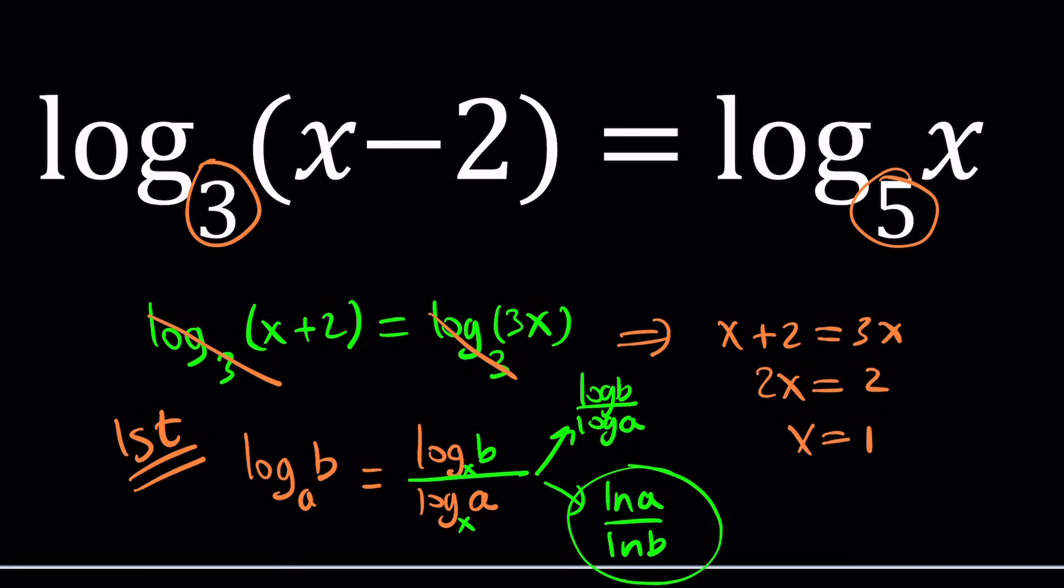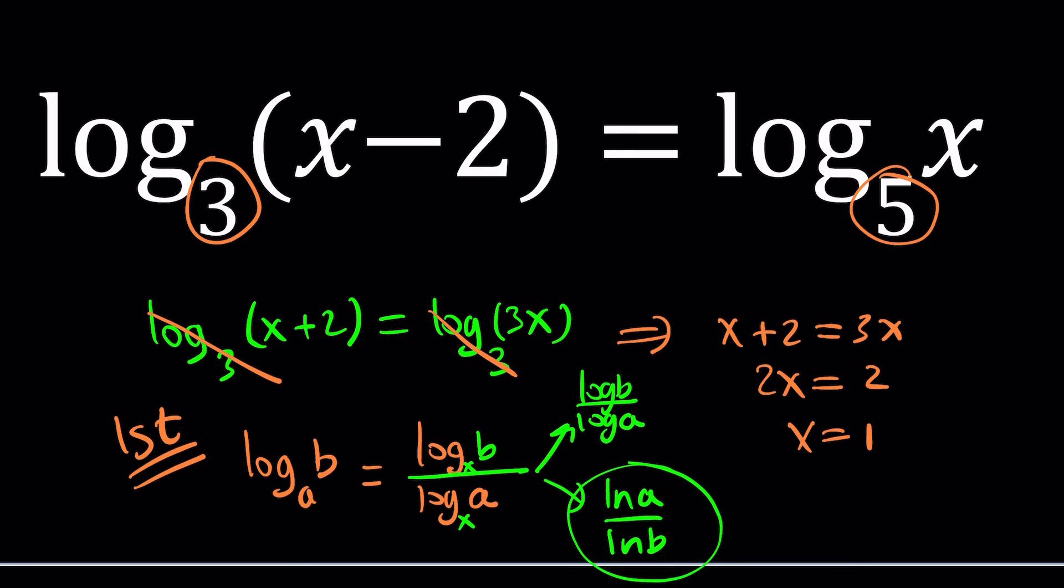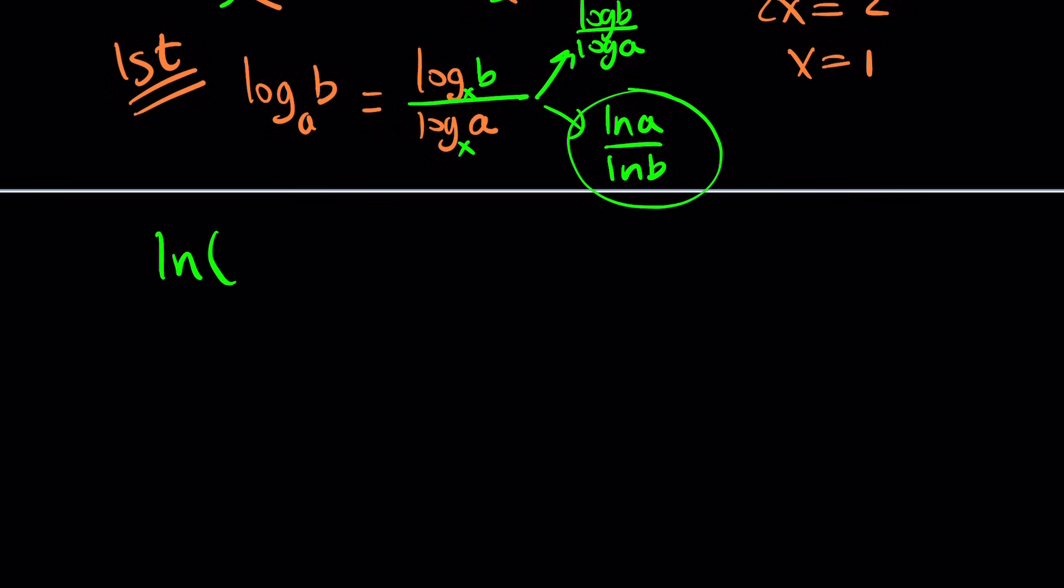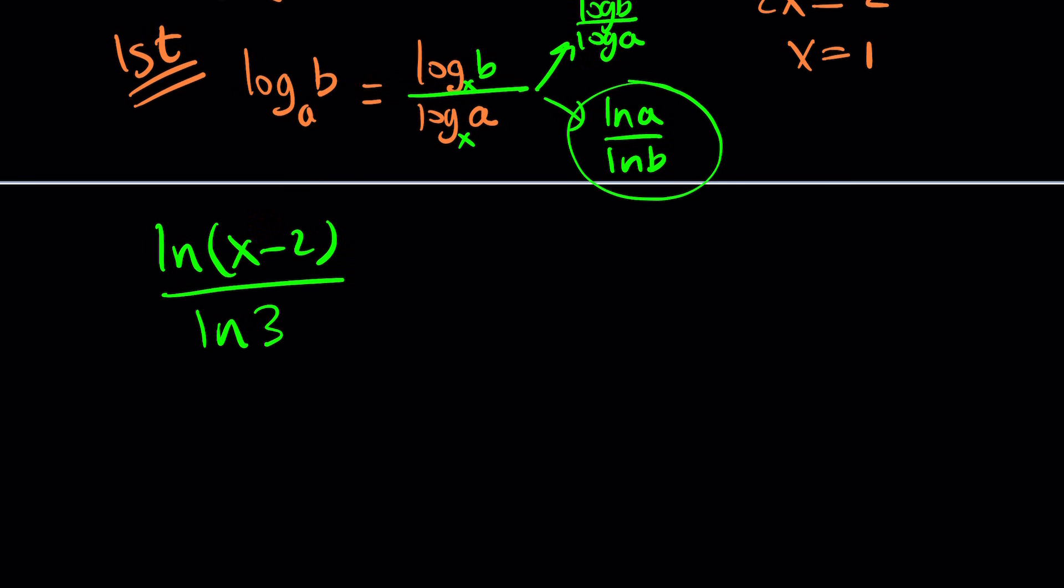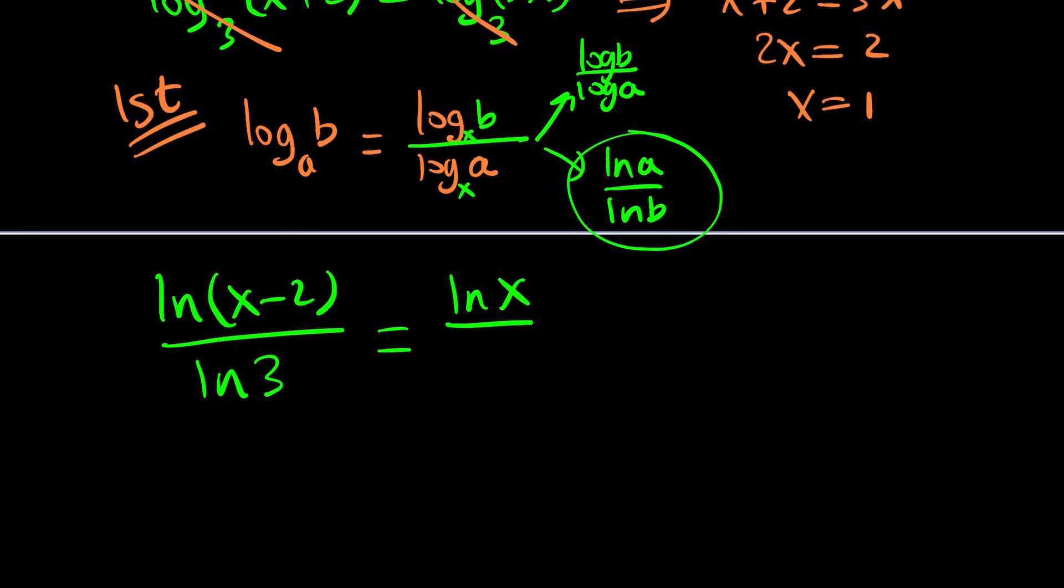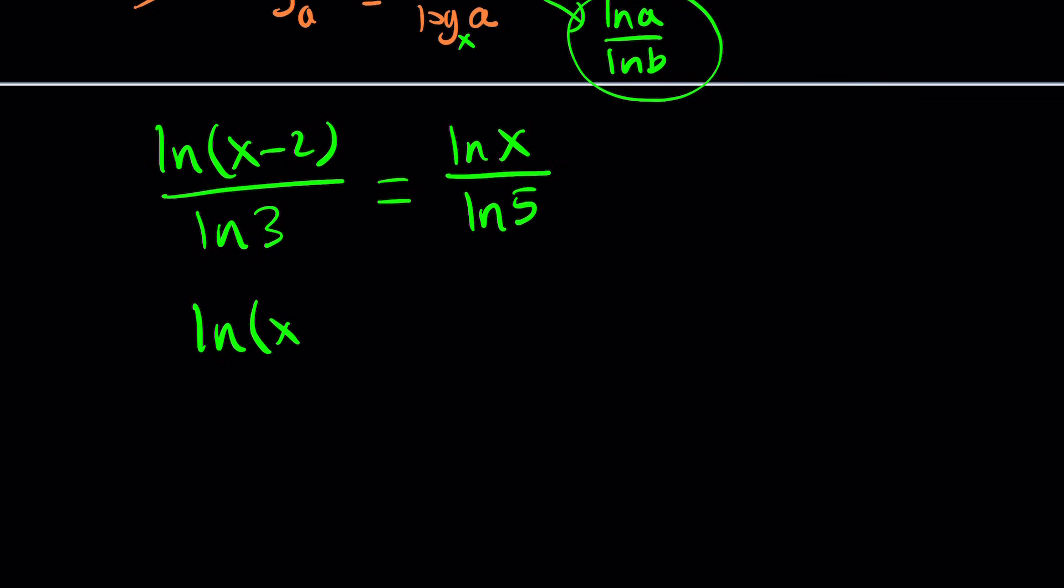If you apply change of base to the left-hand side and the right-hand side, this is what you're going to get. ln(x-2) divided by ln(3) equals ln(x) divided by ln(5). The bases 3 and 5 were different, but now they're constants, so it should be easy to solve.